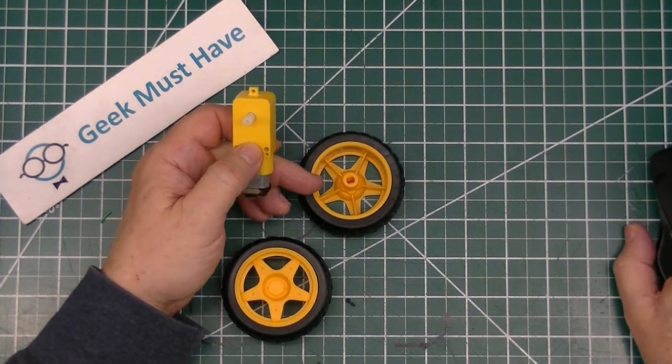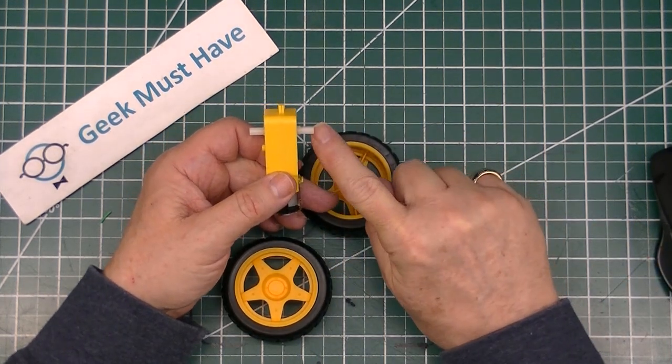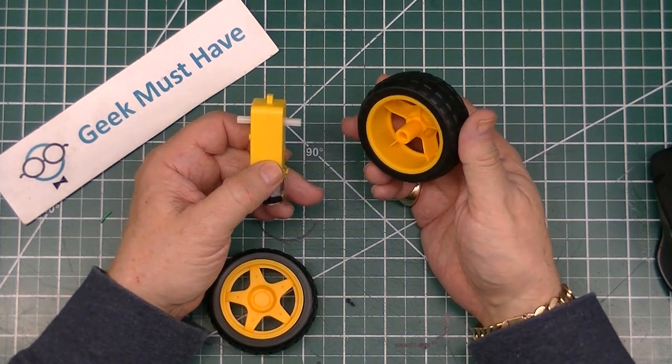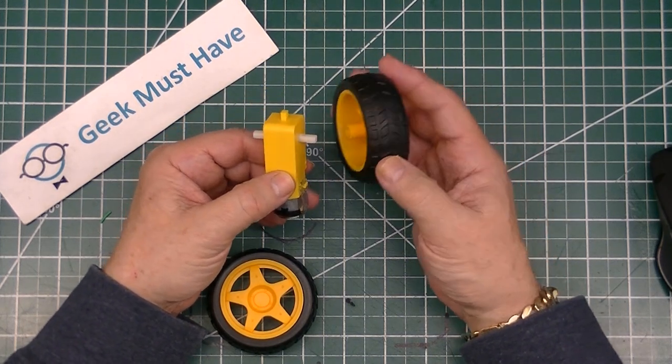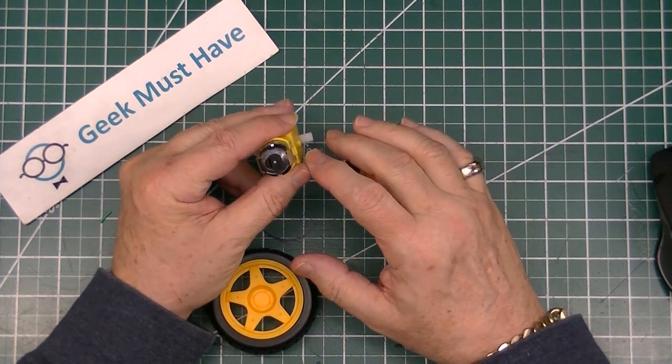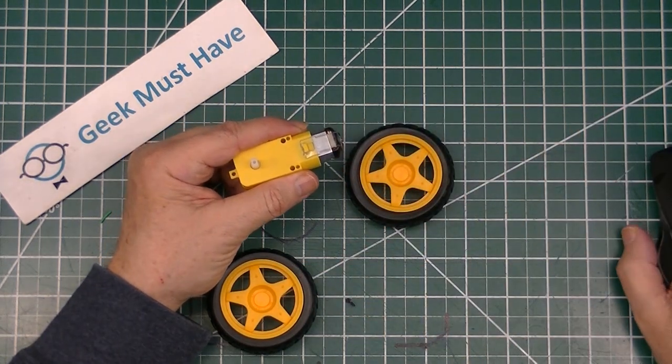This item is the TT 130 geared electric motor. It has an axle on either side so you can take these 66 millimeter wheels and push them onto the axle from either side to make the kit. This runs on anywhere from 3 to 6 volts, possibly even up to 9 volts.